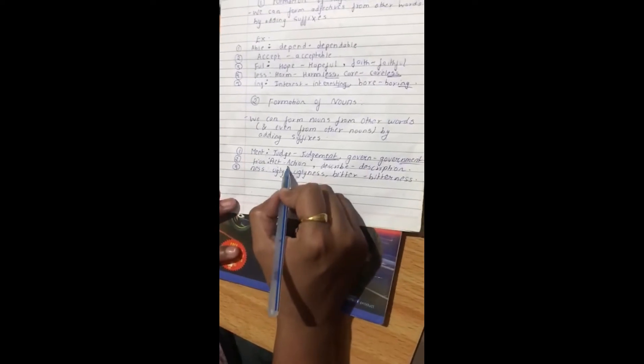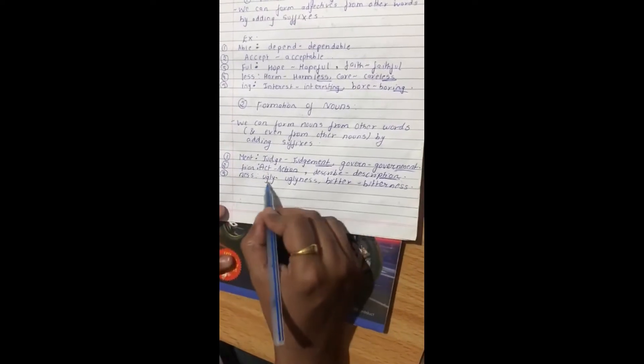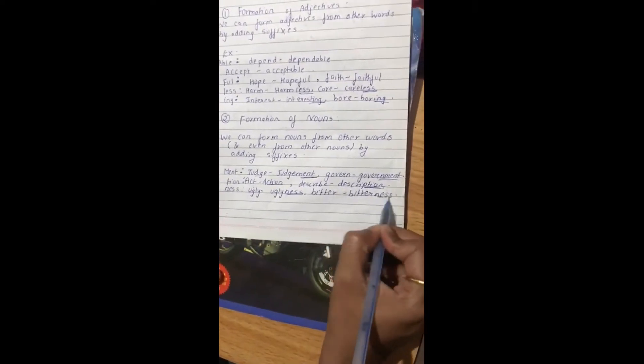-tion: act, action; describe, description. -ness: ugly, ugliness; bitter, bitterness.